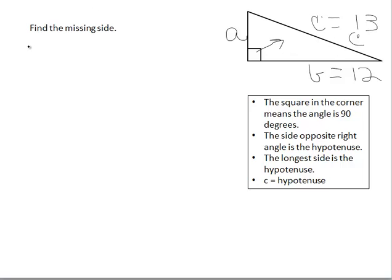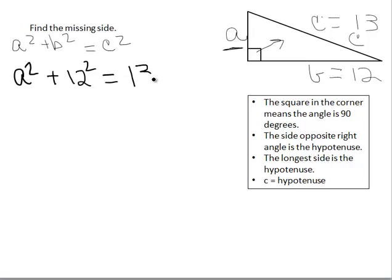So we're going to use Pythagoras' theorem, so that A squared plus B squared equals C squared. And we're going to use that to figure out what this value is. So first of all, we can plug in our values. We don't know what A is, so it's going to stay A squared. But we do know what B is, it's 12, so that's 12 squared. And we know what C is, it's 13, so this would be 13 squared.